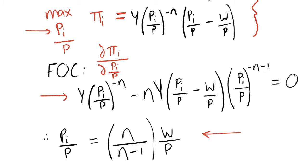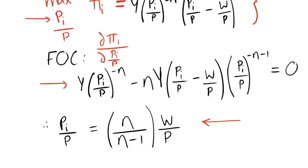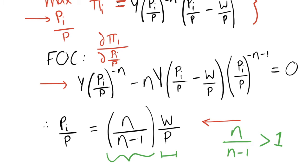After rearranging the first order condition to isolate P_i/P, we get that the optimal price level equals the real wage rate W/P multiplied by a markup η/(η−1). This markup is clearly greater than 1 since the numerator exceeds the denominator, so the price is set above marginal cost — consistent with monopolistic competition generating some economic profit.